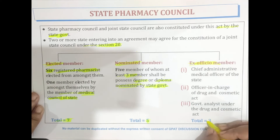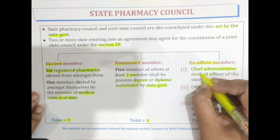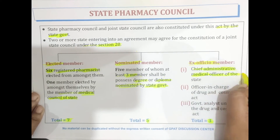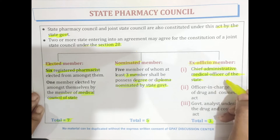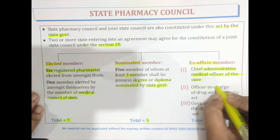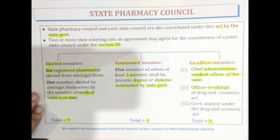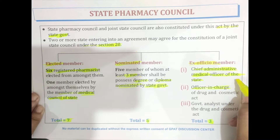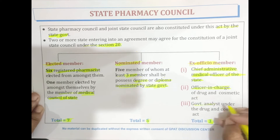The ex officio members total three. The first is the Chief Administrative Medical Officer of the state. The second is the Officer in Charge of the Drug and Cosmetic Act. The third is the Government Analyst under the Drug and Cosmetic Act.